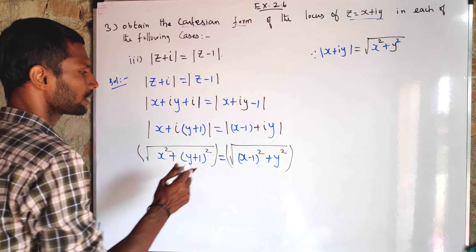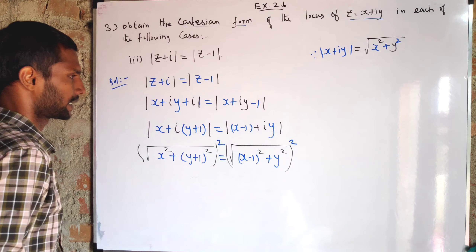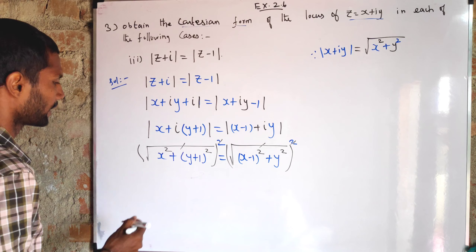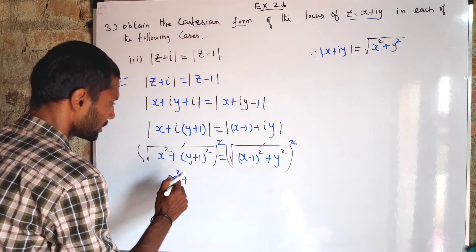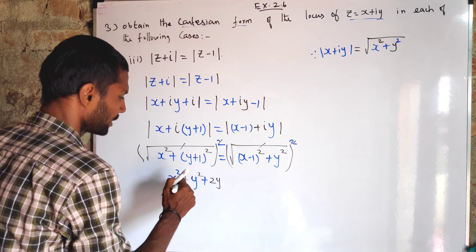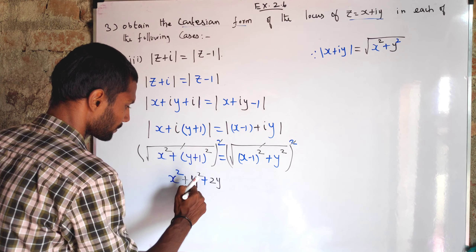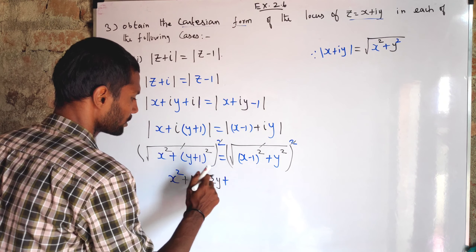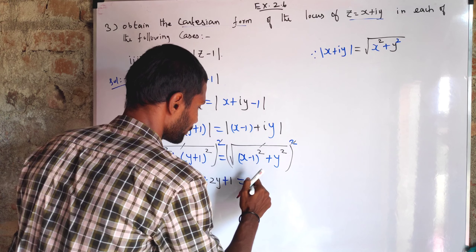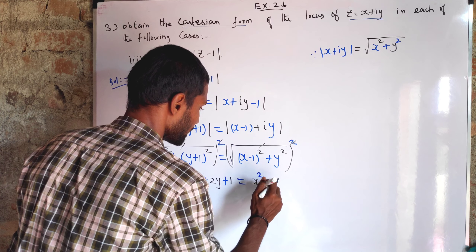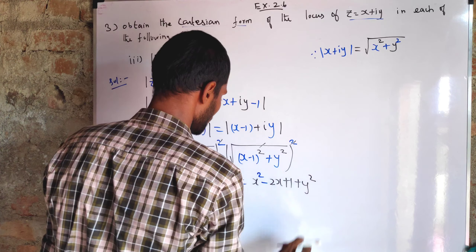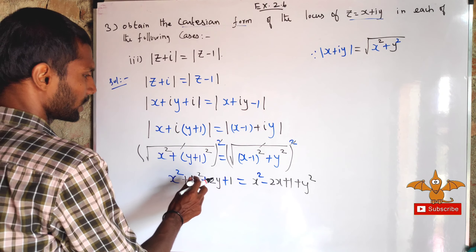Squaring both sides to cancel the square roots: x squared plus (y plus 1) squared equals (x minus 1) squared plus y squared. Expanding using (A+B)² formula: x squared plus y squared plus 2y plus 1. On the right, using (A−B)² formula: x squared minus 2x plus 1 plus y squared.